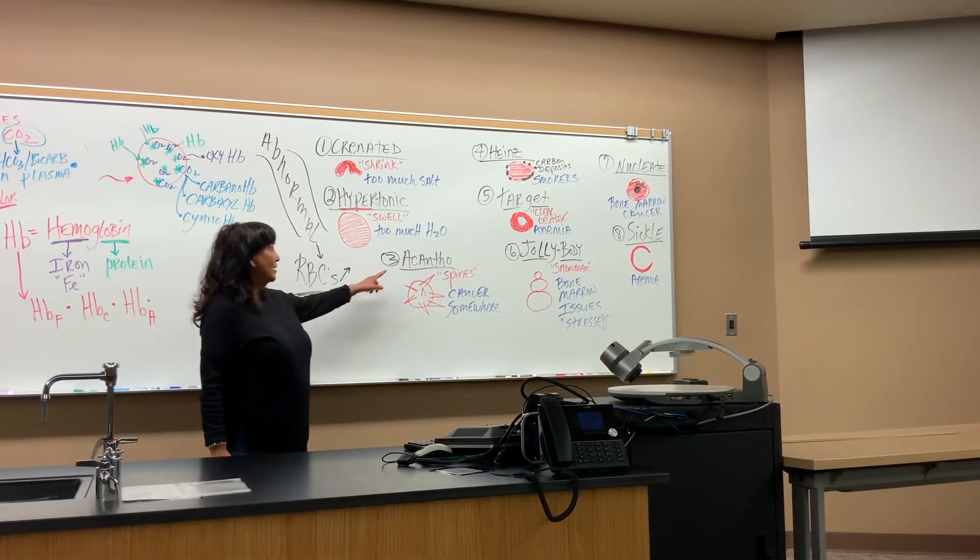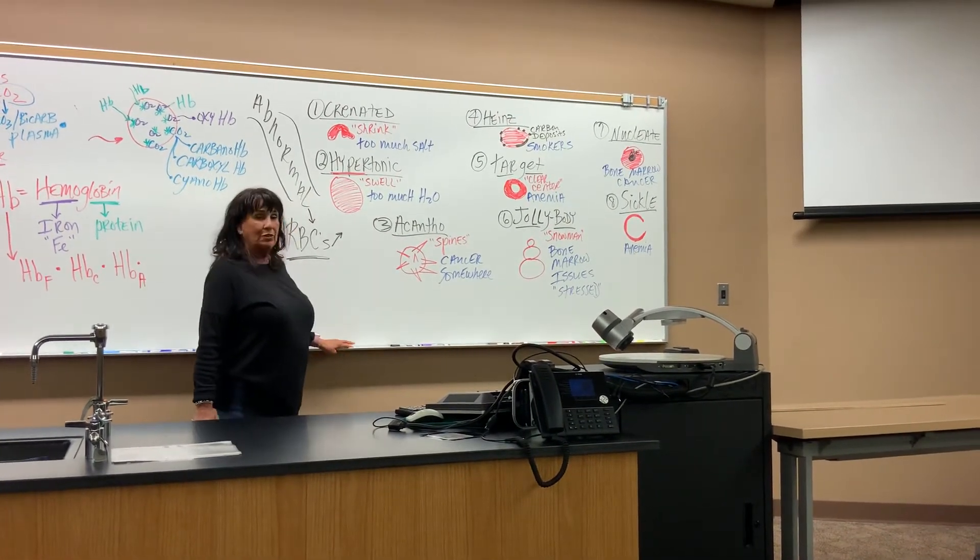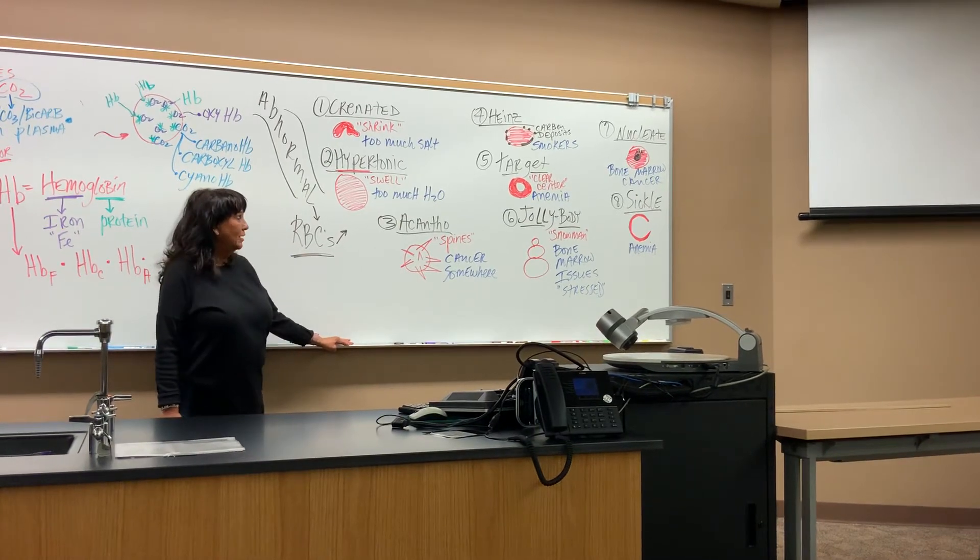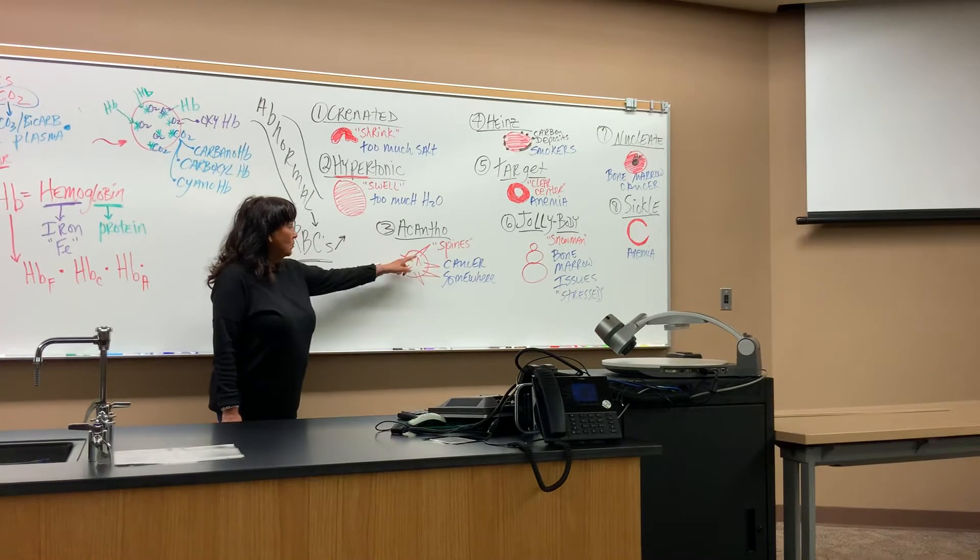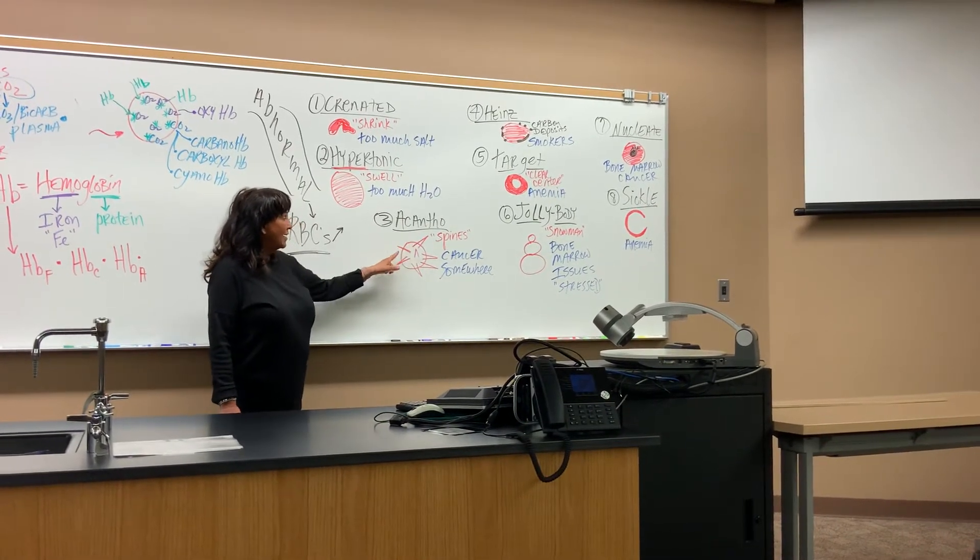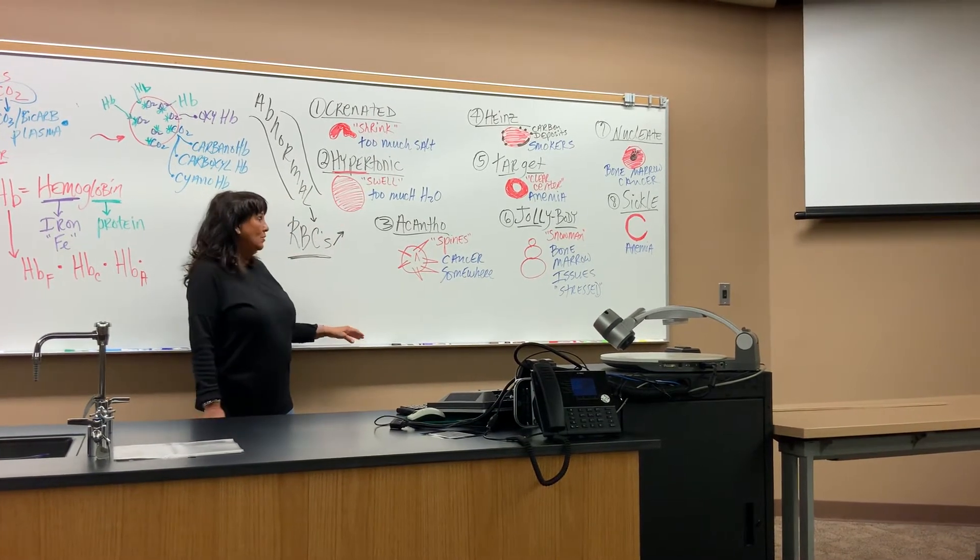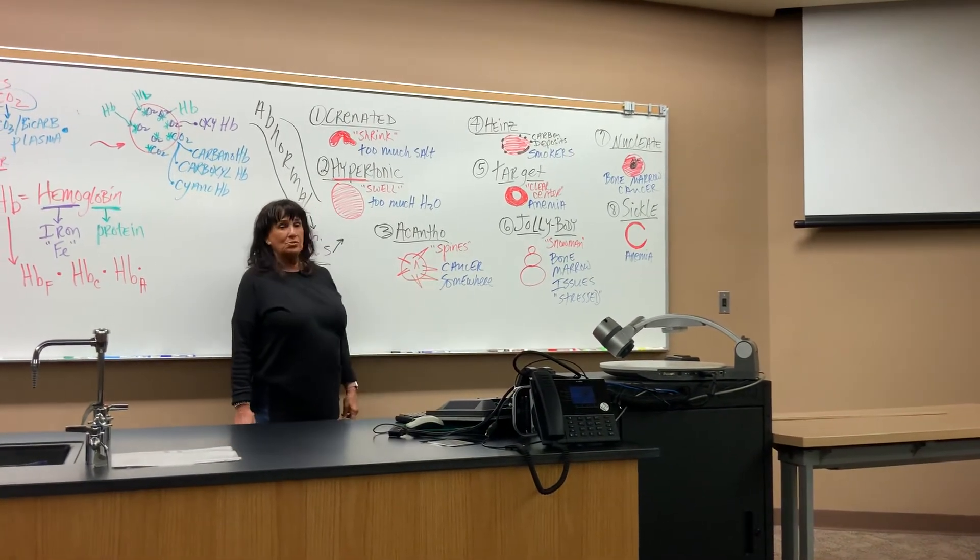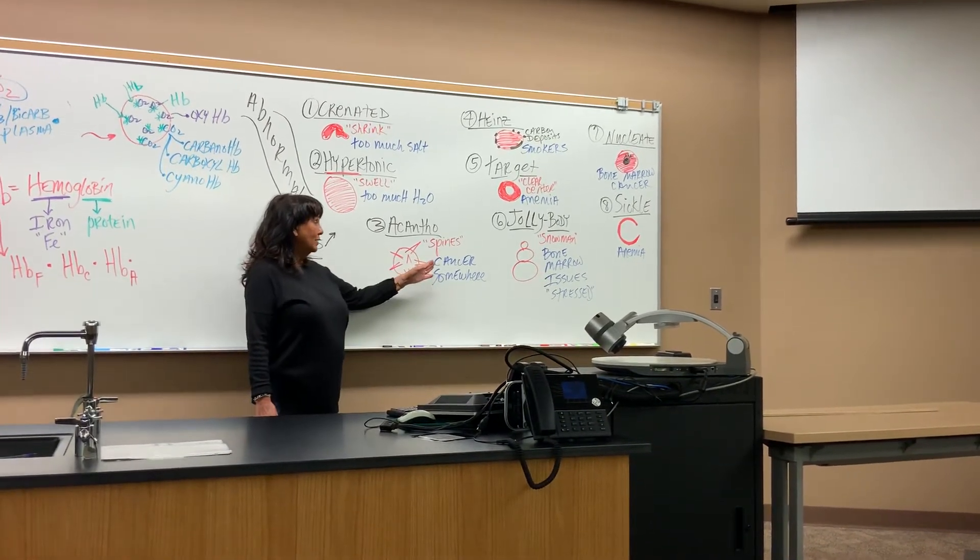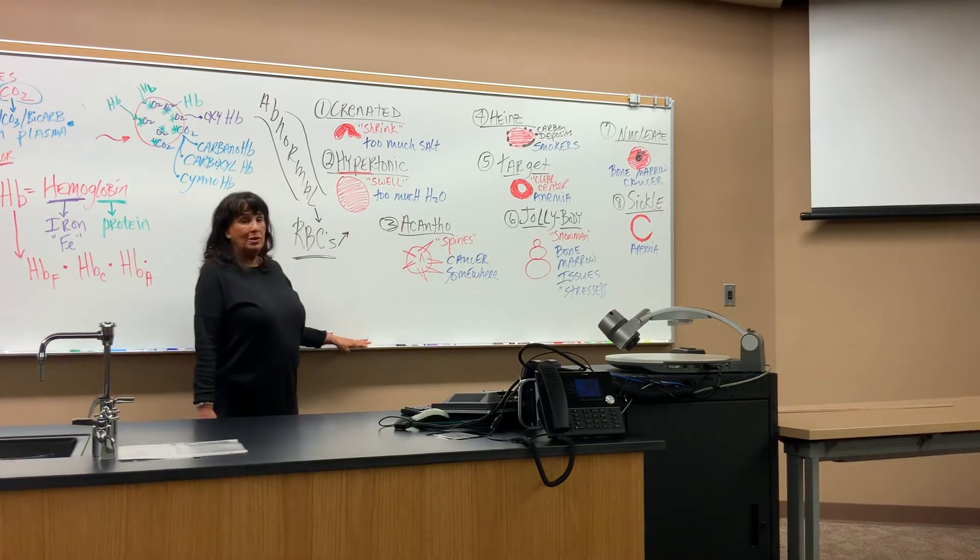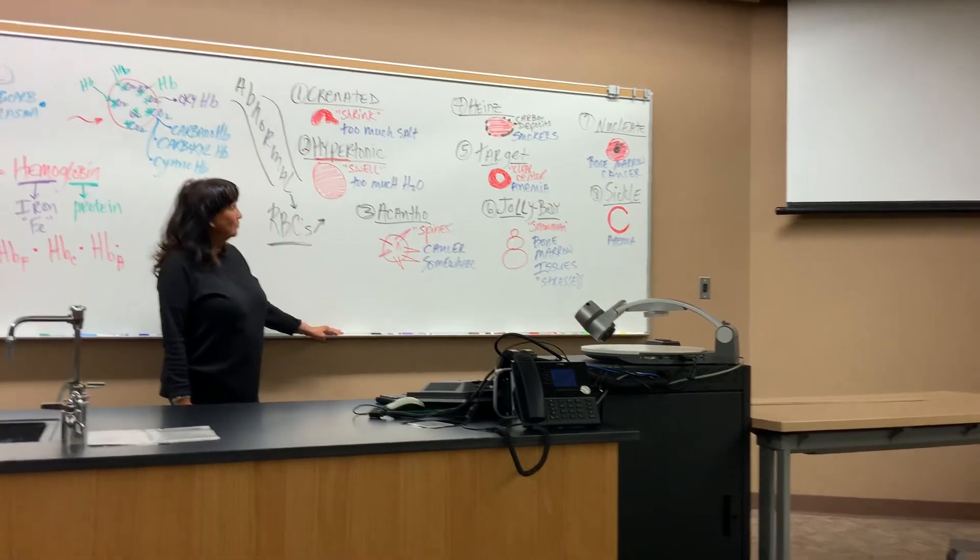We have acantho. You never want to see acanthos. I've seen these in a few of my students way back in the day, and not a good sign at all. But it does alert you, if you see these spines, or they look like toothpicks coming out, it means you have cancer somewhere in the body. It doesn't tell you where, but it's saying that you've got abnormal cell growth, and that would be a cancer. So you need to find out where those are coming from.